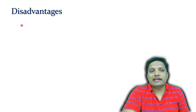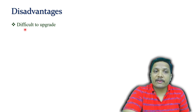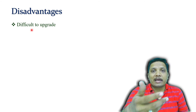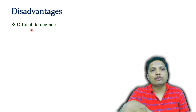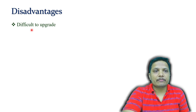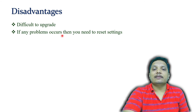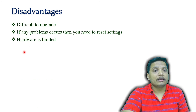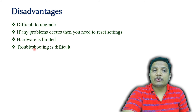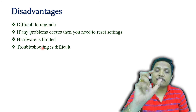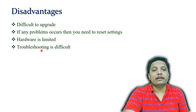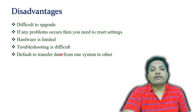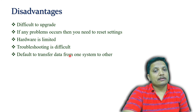There are also disadvantages with embedded systems. One is that it is difficult to upgrade over time as technology advances, because embedded systems use a fixed microcontroller. If any problem occurs, we need to reset the settings. Hardware is limited, and troubleshooting is very difficult since it is a compact system — once fabricated on a PCB, any arising problem is hard to resolve. It is also difficult to transfer data from one system to another.